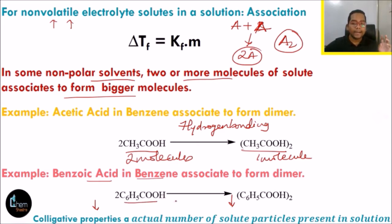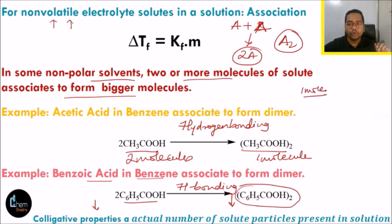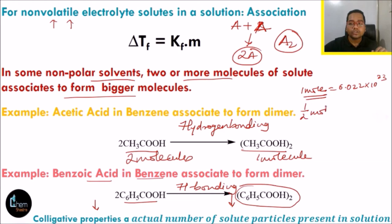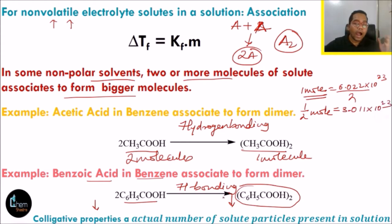For benzoic acid in benzene, one mole of benzoic acid — you expect 6.022 × 10²³ particles. But because of association, it becomes half a mole, approximately 3.011 × 10²³ particles. If the number of particles is halved, the colligative properties are directly proportional to the actual number of solute particles — so the colligative property also becomes half.